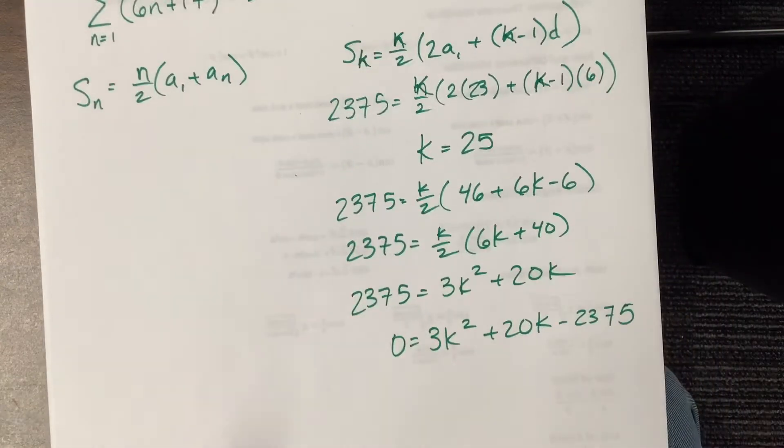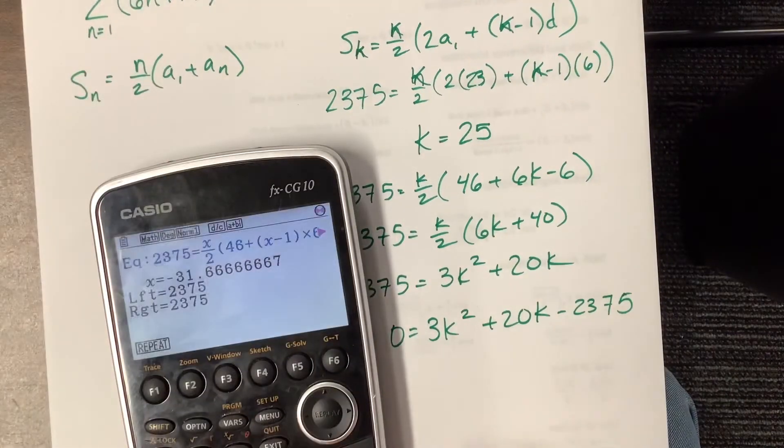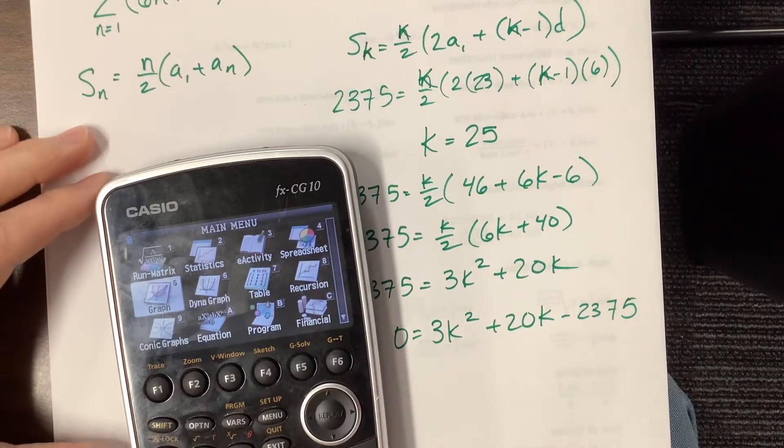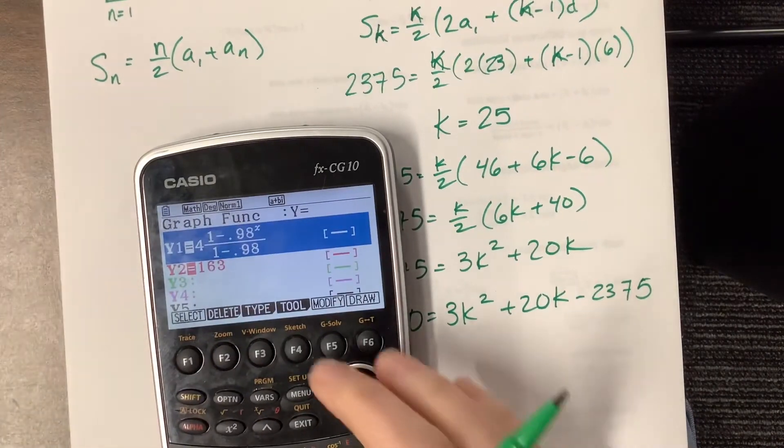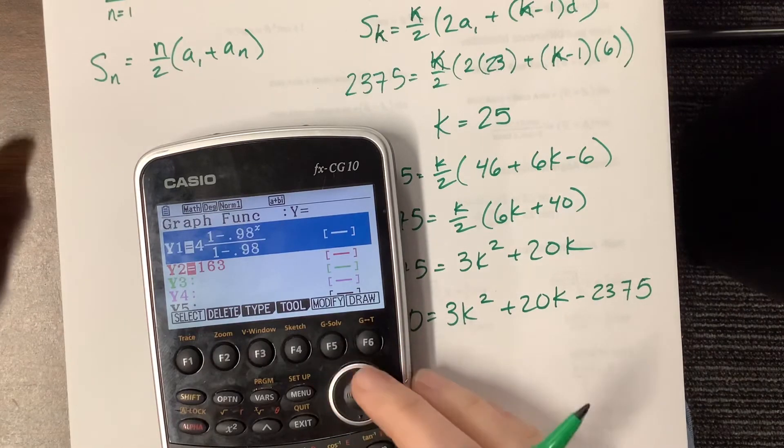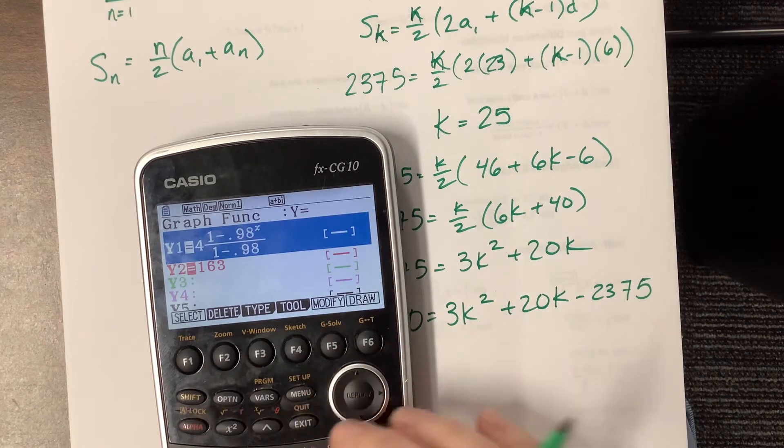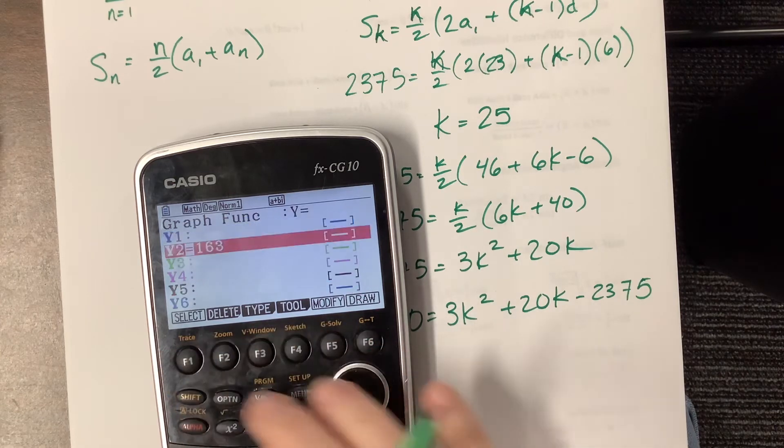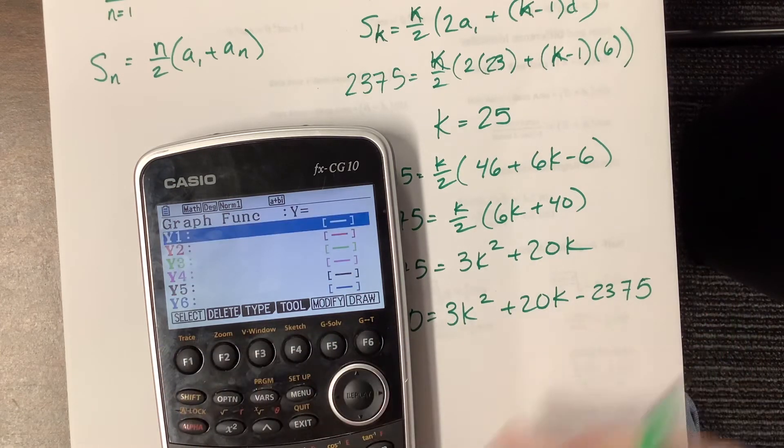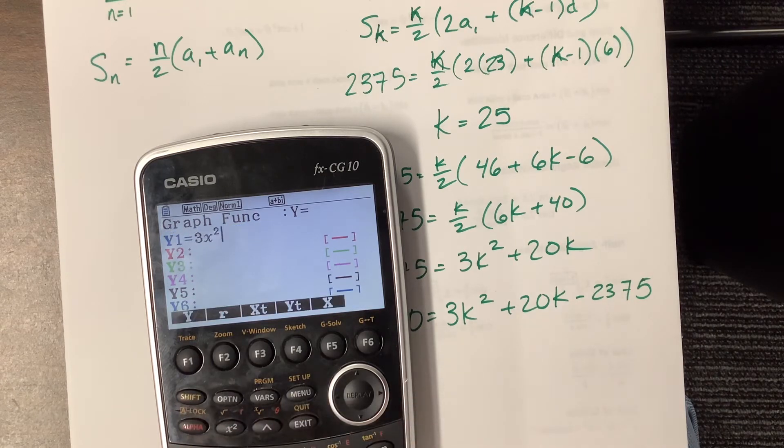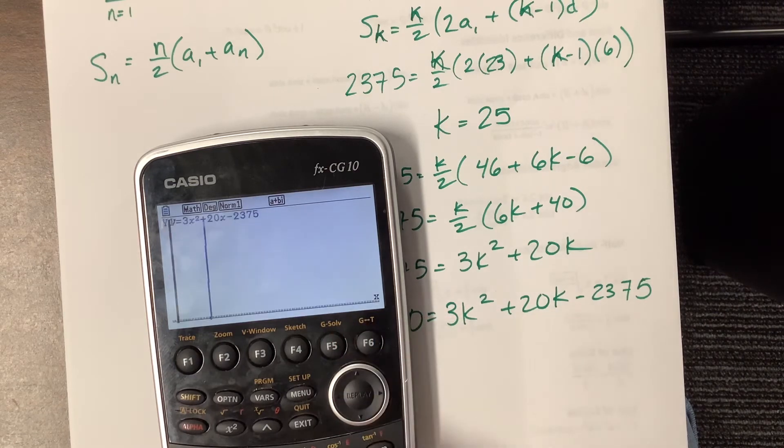I hope that was helpful. The other thing that you could have done is go down to, you could go over to graph, and you could graph, I don't even know. Oh, look, that's the finite geometric series. I could plug that in, and see, I have 3x squared, plus 20x, minus 2375. I could plug that in, and I could look to see, where does it, I don't even know what my window is.